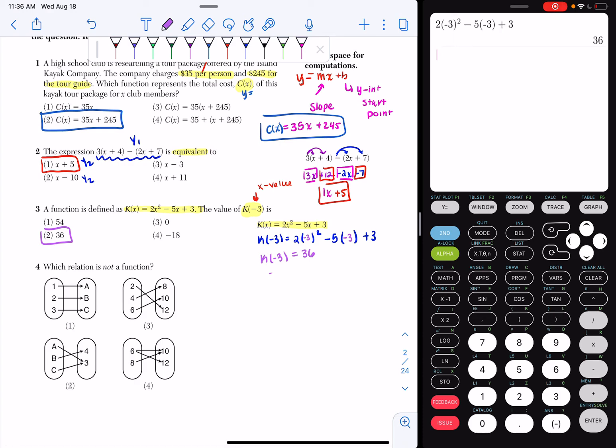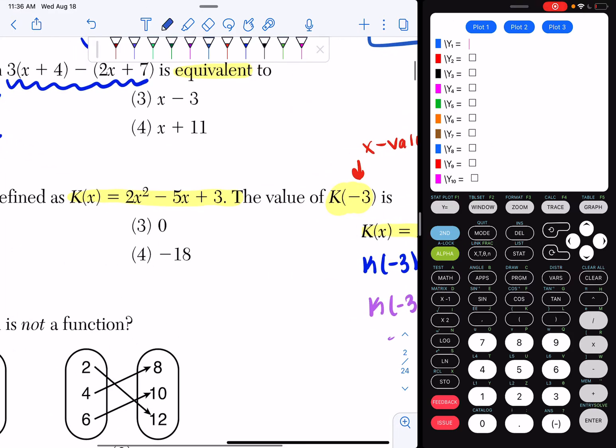Now, if I wanted to, I actually didn't need to do it this way. I could have just gone to y equals and typed this into y1. I would type in 2x squared minus 5x plus 3.